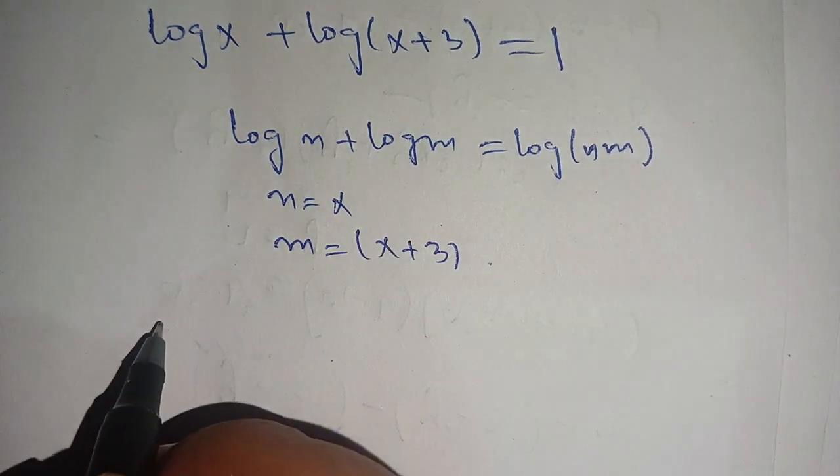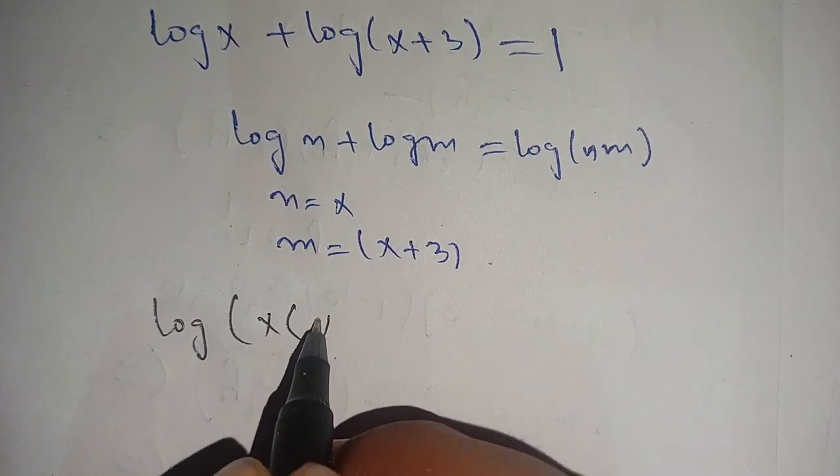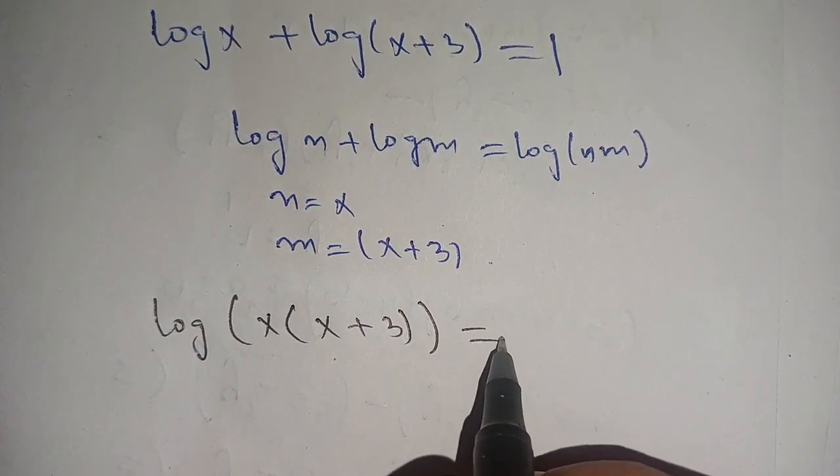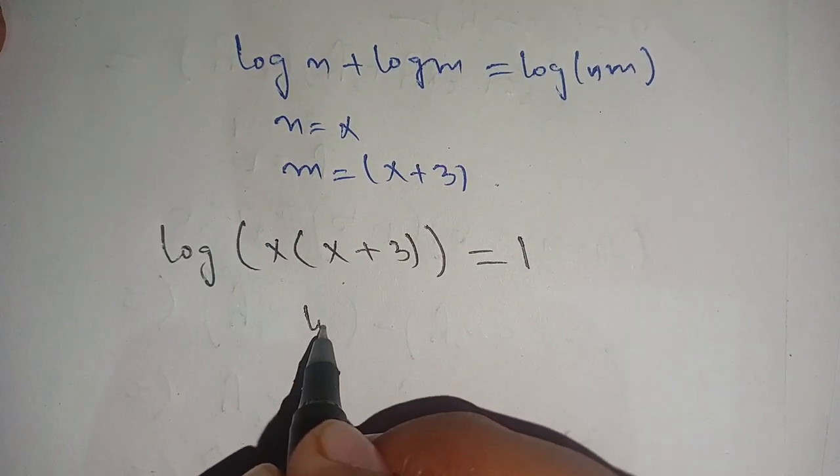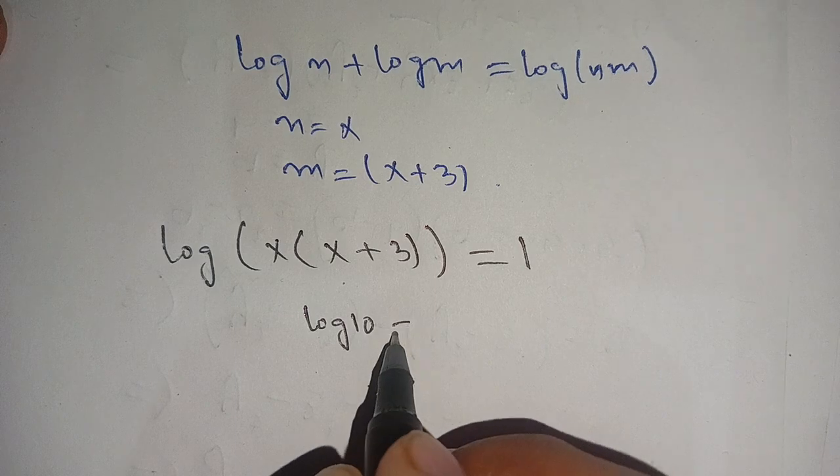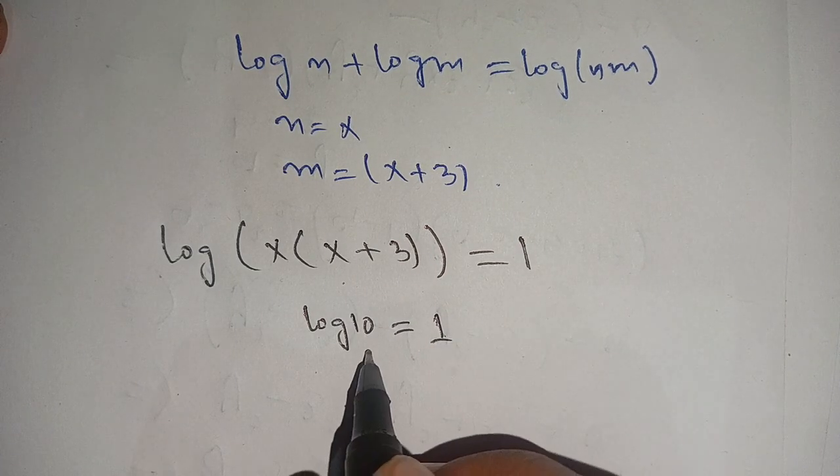Using this identity we get log of x times x plus 3 is equal to 1. Now in the next step we know that log of 10 is equal to 1.